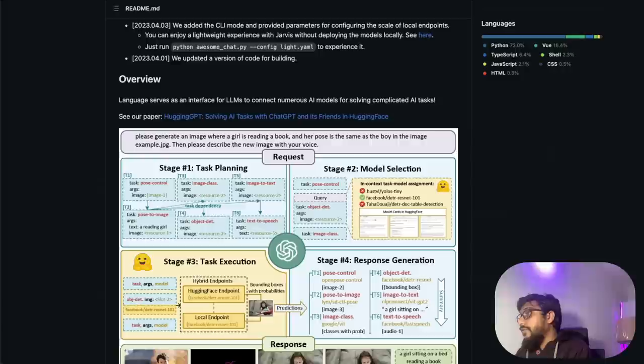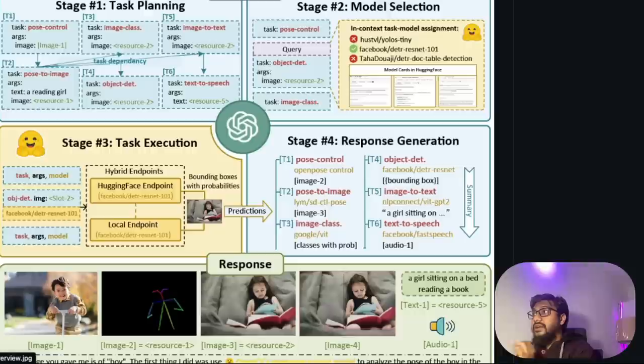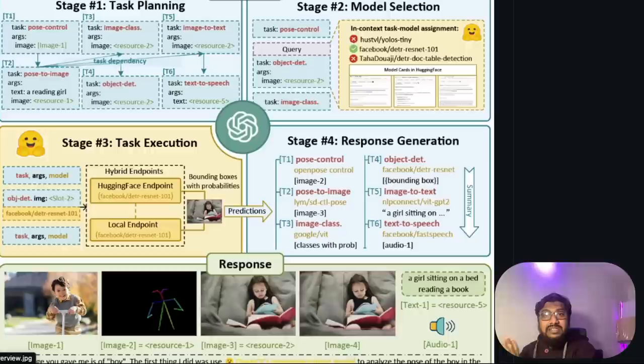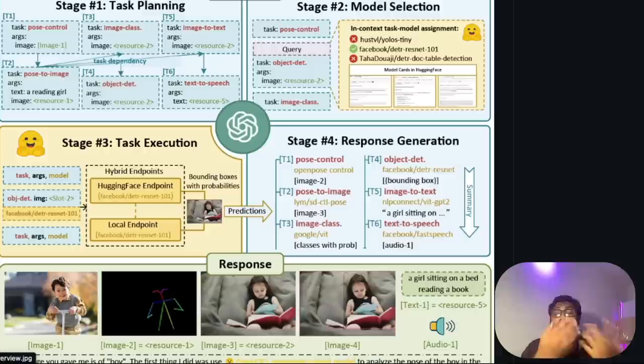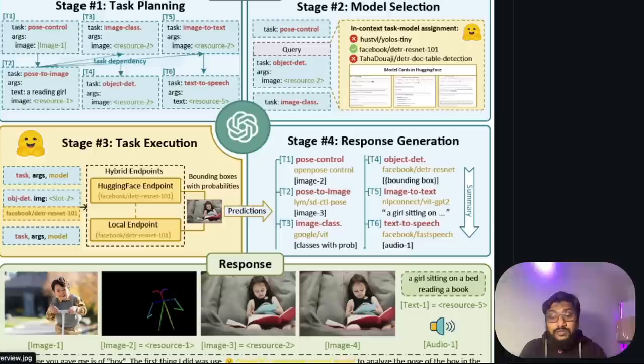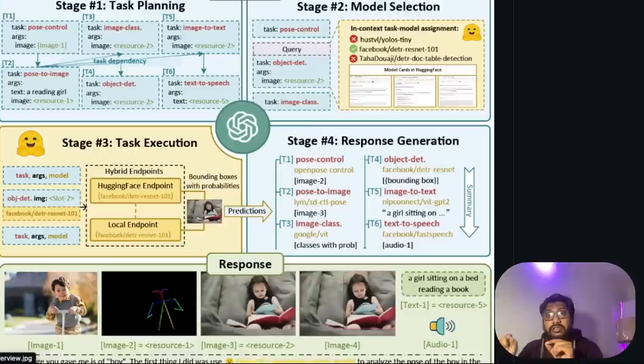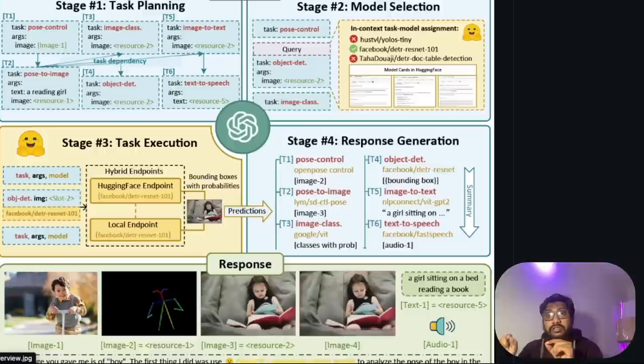Let's look at this example. The simple human instruction goes like this: Please generate an image where a girl is reading a book and her pose is the same as the boy in the image example JPEG. Then please describe the new image with your own voice. First, it's a multimodal system. There is a text being given to the system and an image given to the system. There is also a question about comparing this image with some other image and giving the response back in terms of speech.